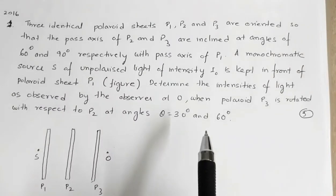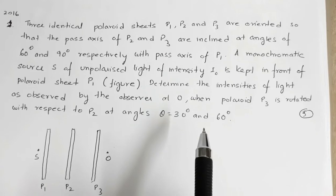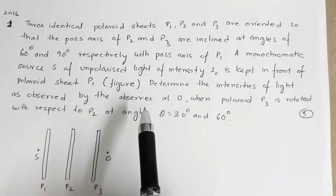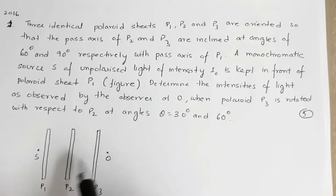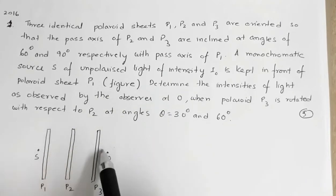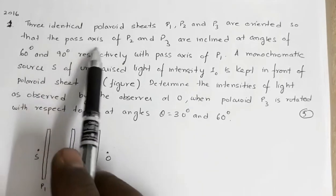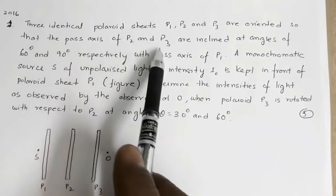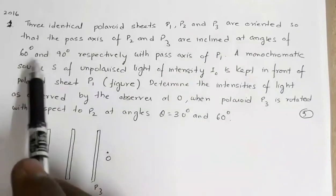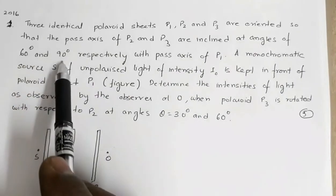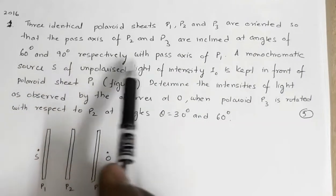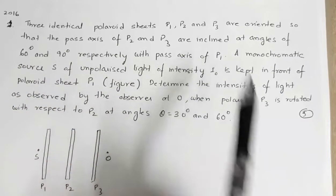In 2017 there were no numericals from wave optics. The next question is from 2016. We have three polaroids P1, P2, and P3, such that the pass axis of P2 and P3 are inclined at angles of 60° and 90° respectively with the pass axis of P1.